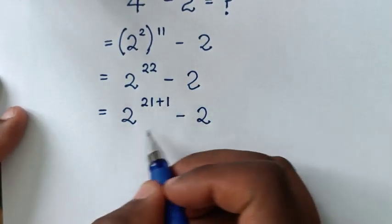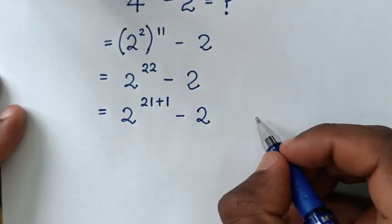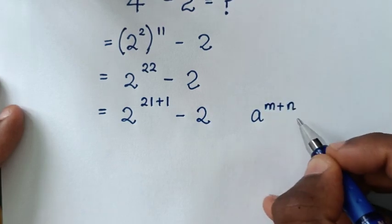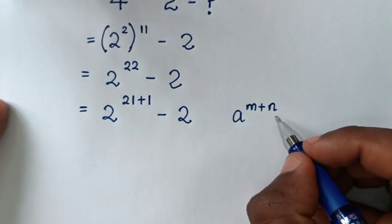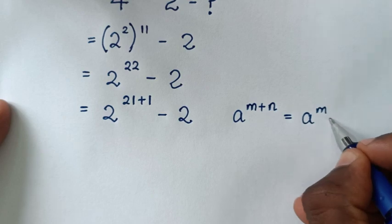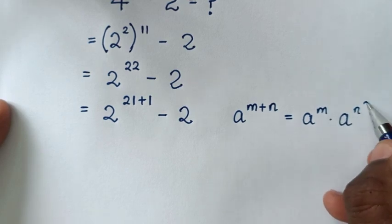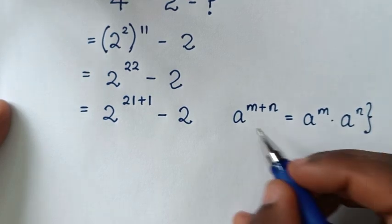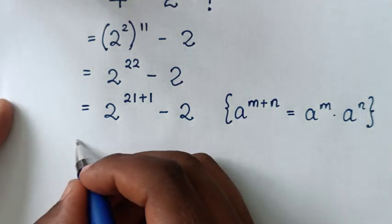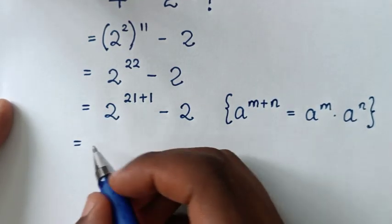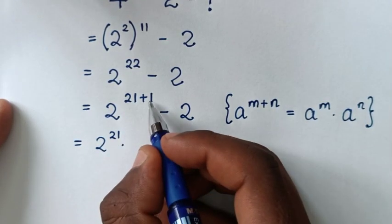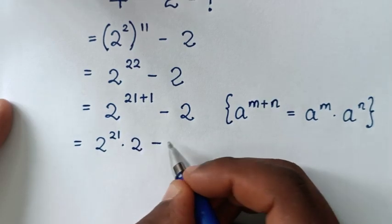From this exponent here we will apply the rule which is a to the power of m plus n, which is equal to a to the power of m times a to the power of n. So it will be equal to 2 to the power of 21, times 2 to the power of 1, which is 2, then minus 2.